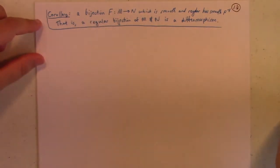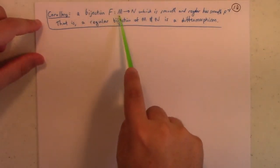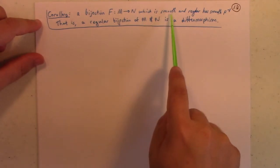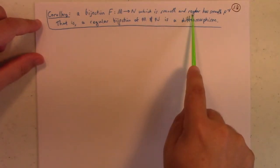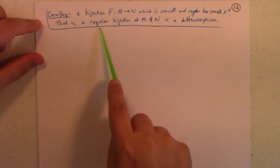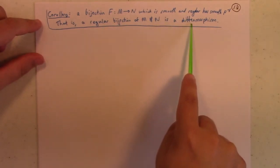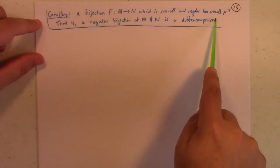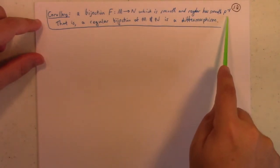A bijection of surfaces in R3, m to n, which is smooth and regular, has smooth inverse. In other words, a regular bijection of m and n is a diffeomorphism. So, the thing that's not assumed here is smoothness of the inverse.